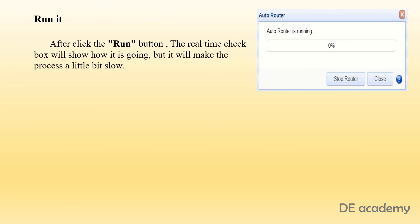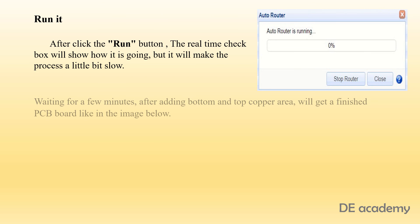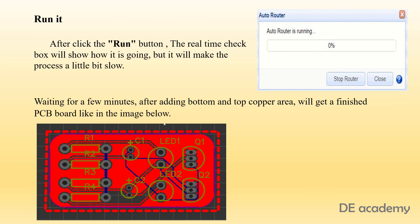After completing all the steps, clicking the Run button will show a real-time checkbox indicating progress, though this process may be a little slow. After waiting a few minutes and adding bottom and top copper areas, the result will be a finished PCB board as shown in the image.